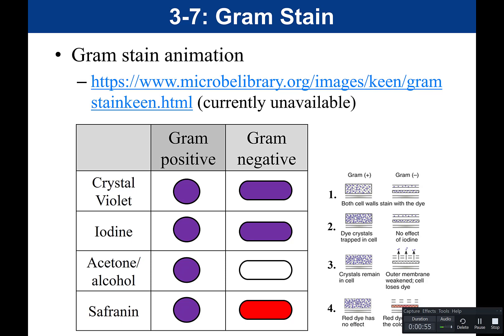When doing gram stains, use young, actively dividing cultures. If cultures are old, the cells may become gram-variable, meaning the age of the culture affects cell wall structure, producing abnormal staining results. So it's critical to use young, actively dividing cultures.